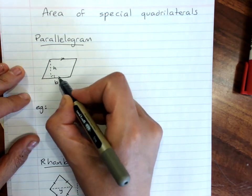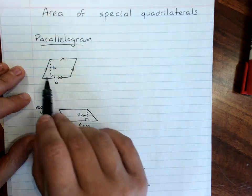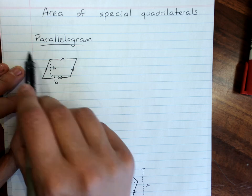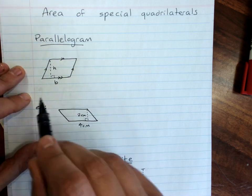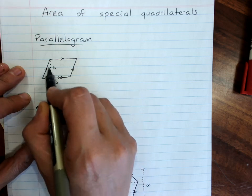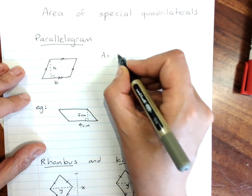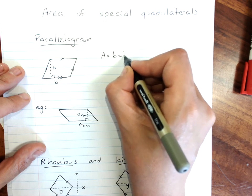It has two pairs of parallel sides. It's like a squashed rectangle—an elephant sat just here. We need the dimensions that are at right angles to each other, and that's the base and the height. The area of a parallelogram is just base times height.